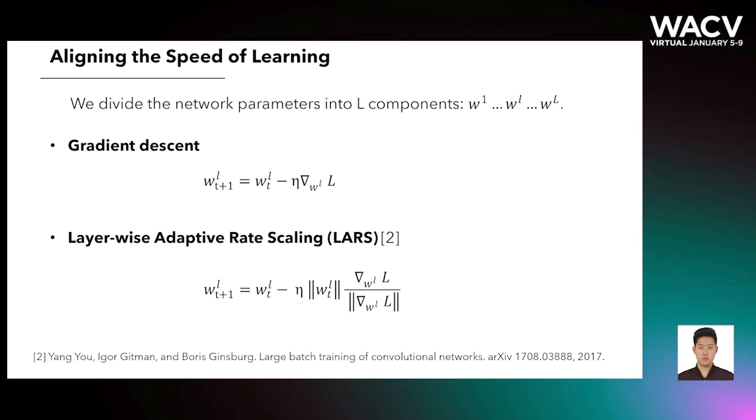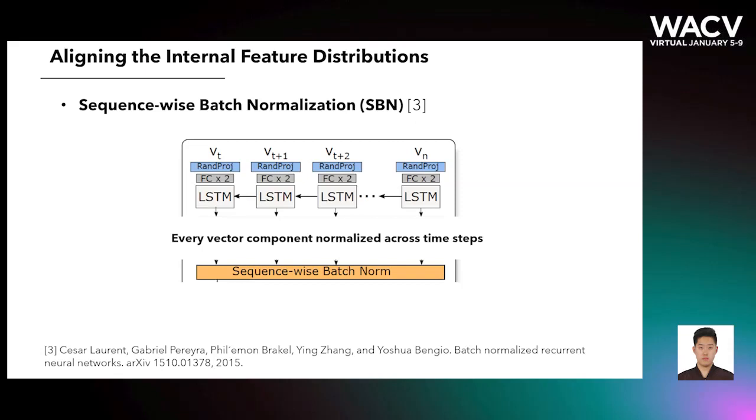We use layer-wise adaptive rate scaling LARS to align the pace of learning of subnetworks. Gradient descent updates the parameter with the magnitude of the gradient, while LARS scales the gradient updates for different layers so that the updates become proportional to the parameter widths. This technique was originally designed for training under extremely large batch sizes. Here, we redirect the familiar technique for a novel purpose.